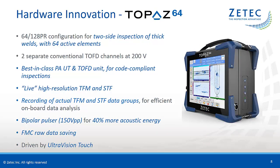Let me now introduce ZTEK's latest hardware innovation in phased array UT. At the end of last year, we launched the Topaz 64, a high-end fully integrated portable unit. It has a 64-128 PR phased array configuration that allows for two-side inspection of thick welds with 64-element active aperture probes. The two separate conventional TOFD channels at 200 volts make it a best-in-class inspection system for code-compliant weld inspections using simultaneous phased array and TOFD.